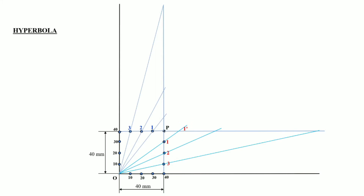Here we are getting six new points on the vertical axis and horizontal axis beyond point P. We will name these points 1 dash, 2 dash, and 3 dash on both lines. To find the curve points, we draw vertical lines from points 1 dash, 2 dash, and 3 dash, and horizontal lines from points 1, 2, and 3 towards the right. Wherever these lines intersect, we get three new points.